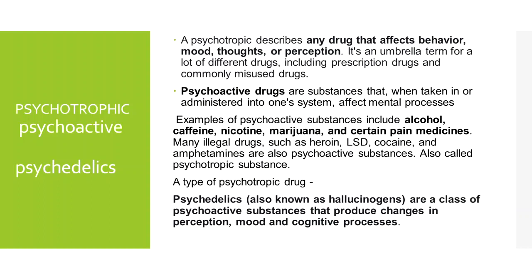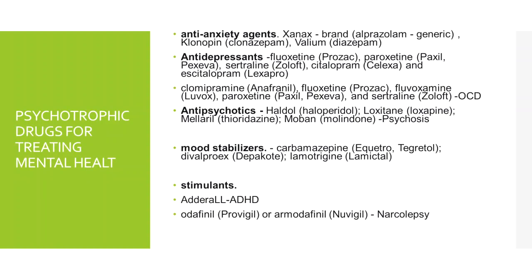Psychedelics are a class of psychoactive drugs that produce changes in perception, mood, and cognitive processes, and can also produce hallucinations. Examples include cocaine and methamphetamine. Other psychotropic drug categories include anti-anxiety agents, antidepressants, antipsychotics, mood stabilizers, and stimulants — these are treatment medications for persons with psychological disorders.